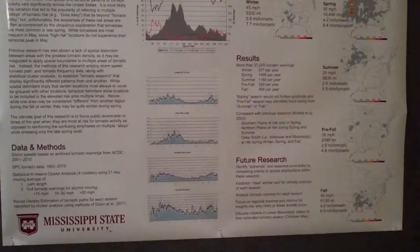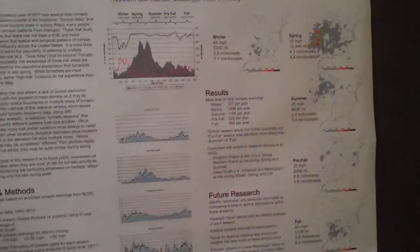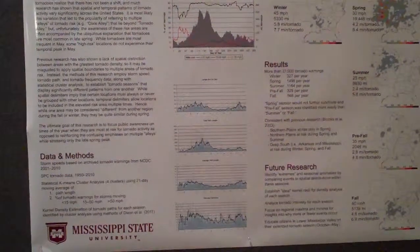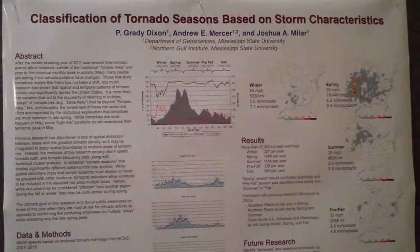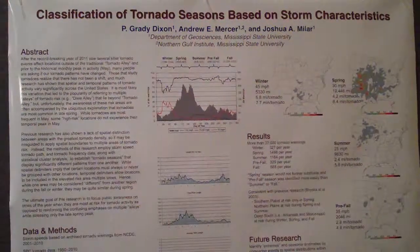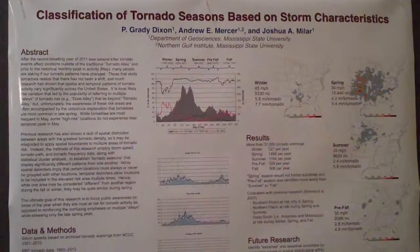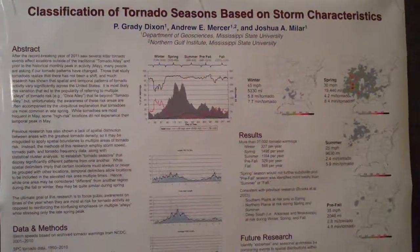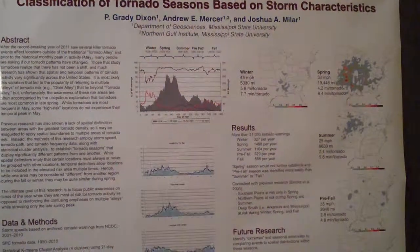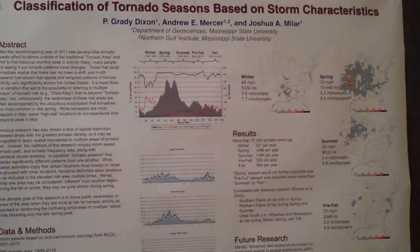Those results are broken down by five different seasons, and those seasons were identified based on storm speed as portrayed by National Weather Service text-based warnings. The methods for calculating the seasons also use daily average tornado path. We see the four seasons we would expect — winter, spring, summer, and fall — and then a very down season that we're calling pre-fall.